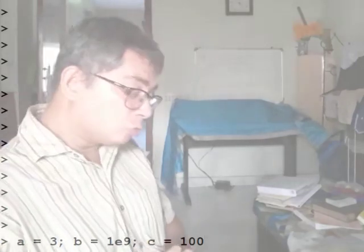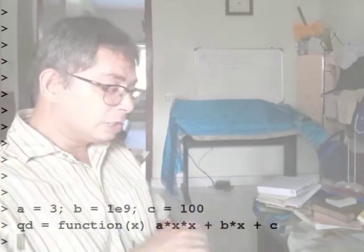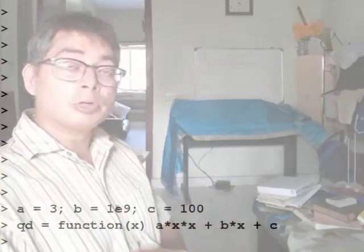And I will also tell you how to avoid it for that particular example. So this example is taken from our very familiar formula for solving a quadratic equation, that b squared minus 4ac formula. Suppose I have a quadratic equation with these values for my a, b and c: a equal to 3, b equal to 10 to the power 9 and c equal to 100. So notice that b is enormously higher than the other two. Now I need to do this quadratic thing. So I will have this function qd which will compute the quadratic for me.